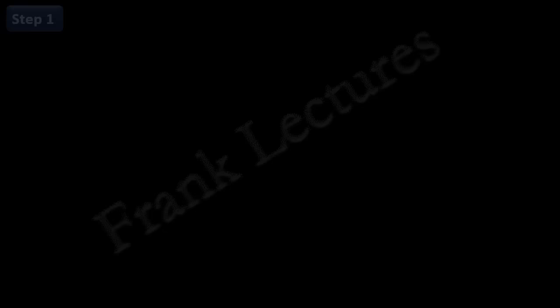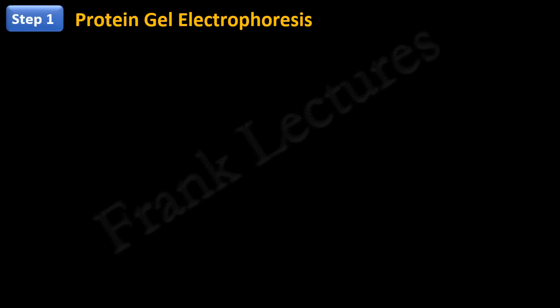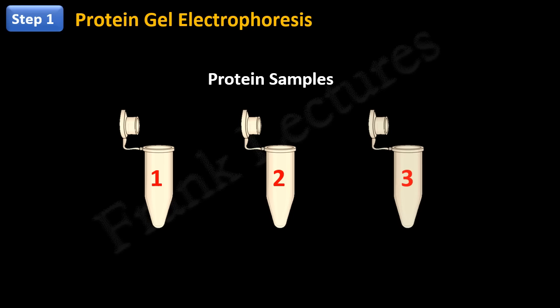The first step in Western blotting involves separation and characterization of proteins by gel electrophoresis. Suppose we have three protein samples. Let's say these samples have been prepared by extracting proteins from plant, bacteria, and fungi respectively. Each of these samples contains thousands of proteins. Our aim is to detect presence of a specific protein in these samples.